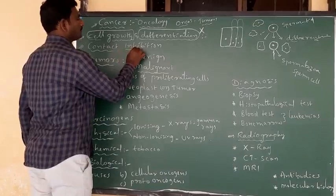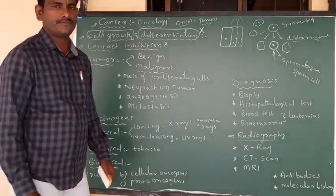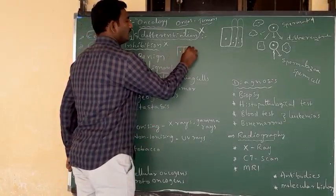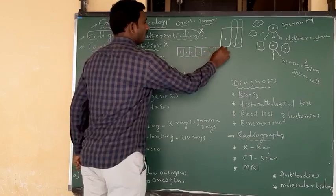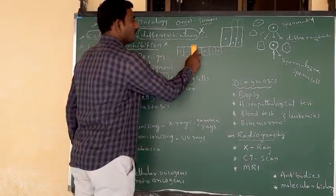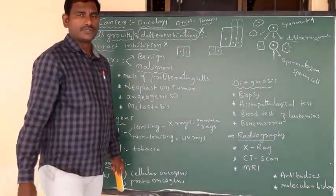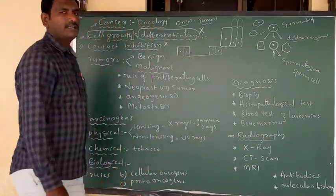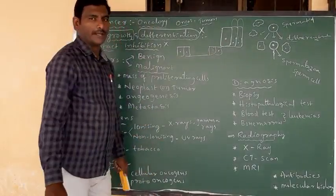Along with that, contact inhibition is also not exhibited by cancerous cells. What is contact inhibition? For example, this is epithelial tissue. This is normal epithelial tissue. By accident or by wounds, some of the cells are going to be damaged, so there is a loss of cells.